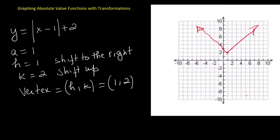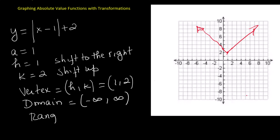The domain is all real numbers, written in interval form as open parenthesis negative infinity comma positive infinity close parenthesis. The range includes all values greater than or equal to 2, written in interval form as closed bracket 2 comma infinity close parenthesis.